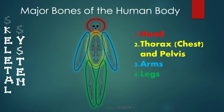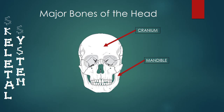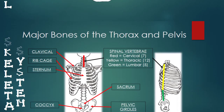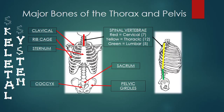Next we'll be talking about the major bones of the human body, divided into four categories: the head, thorax and pelvis, arms and legs. Without going into too much detail, the two major bones of the head include the cranium and the mandible. The major bones of the thorax and pelvis include the clavicle, rib cage, sternum, coccyx, cervical vertebrae, thoracic vertebrae, lumbar vertebrae, sacrum and pelvic girdles.